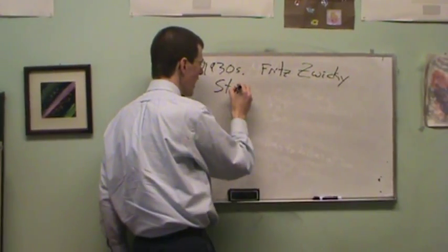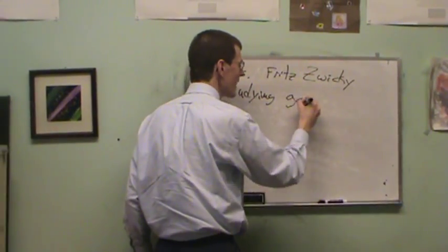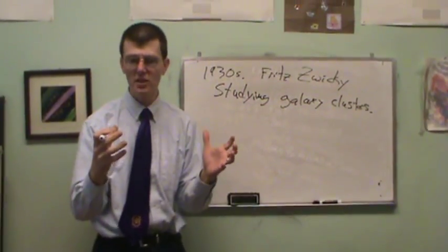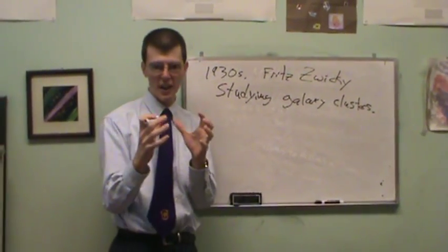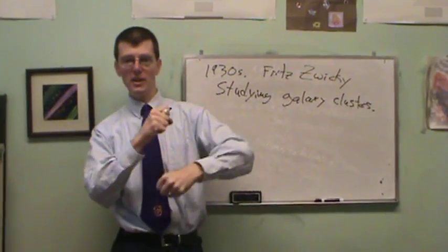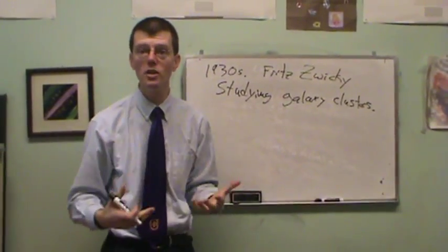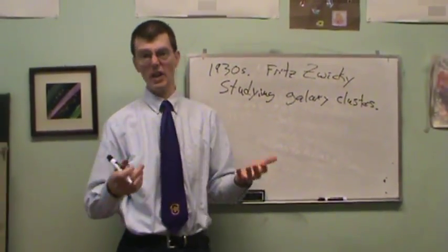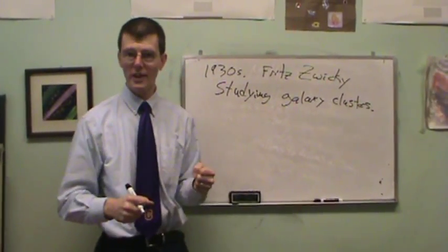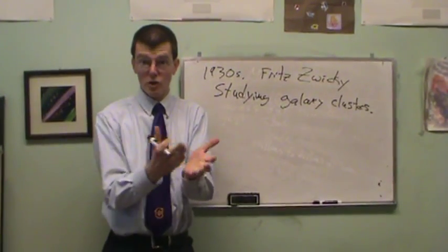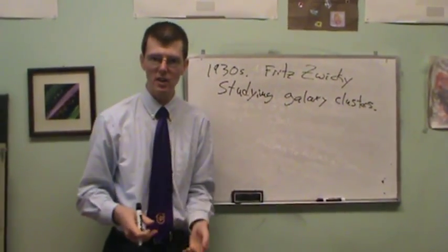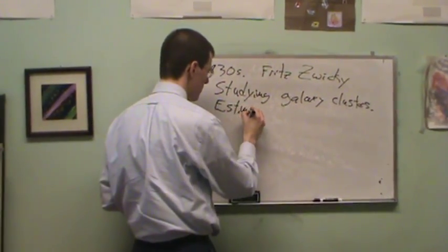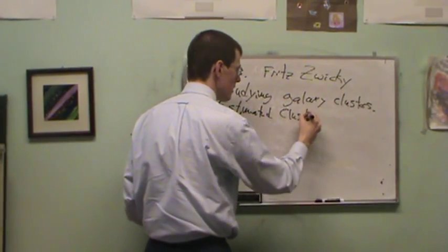So he's studying clusters of galaxies. A galaxy, several hundred billion stars like the Milky Way, held together by gravity. And then a galaxy cluster - now you've got a bunch of galaxies orbiting around each other. Often you have hundreds or thousands of galaxies orbiting around each other. So what does Fritz Zwicky do? He does something which is relatively straightforward.